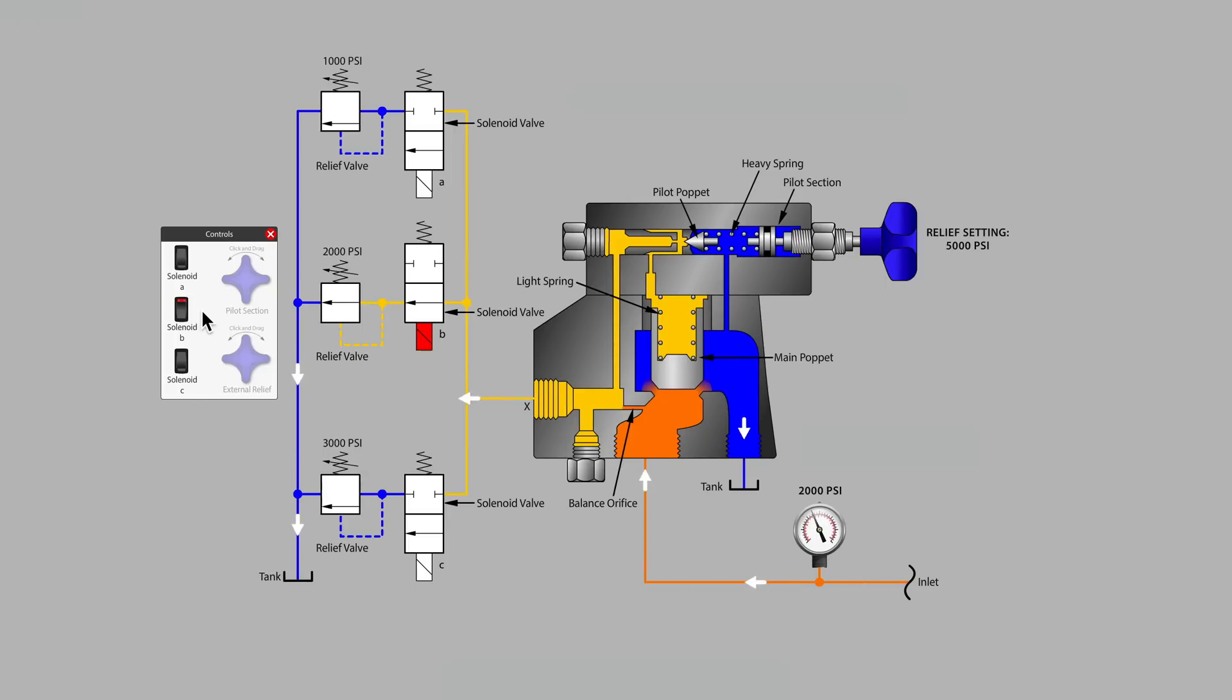Turning on solenoid B in the middle, we see that our system pressure gauge is now set to 2000 psi. Turning on solenoid C, we'll find out our system pressure is now at 3000 psi.